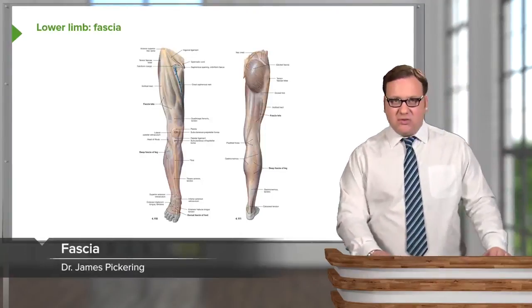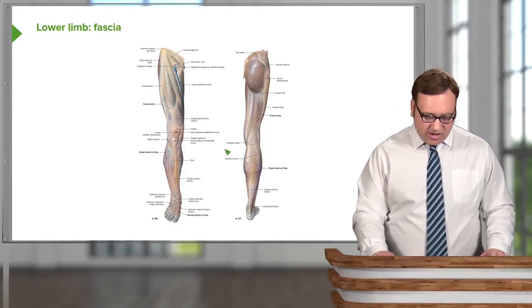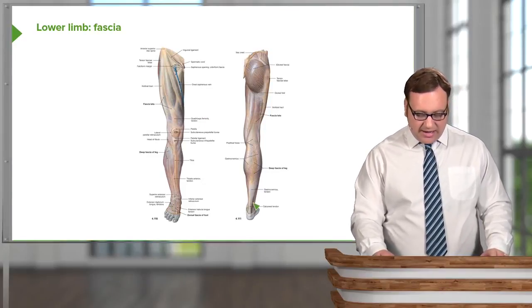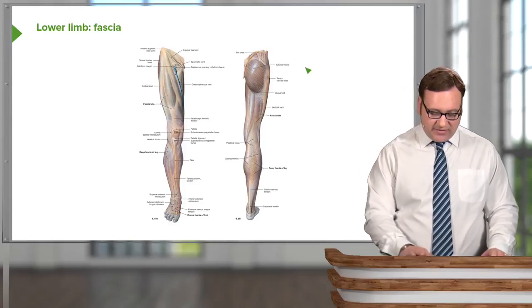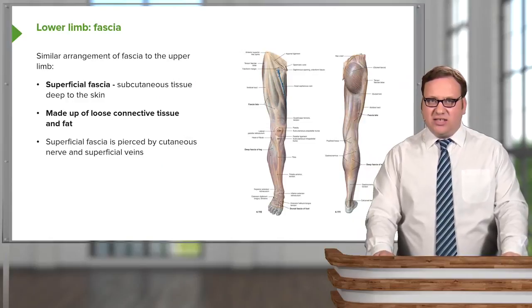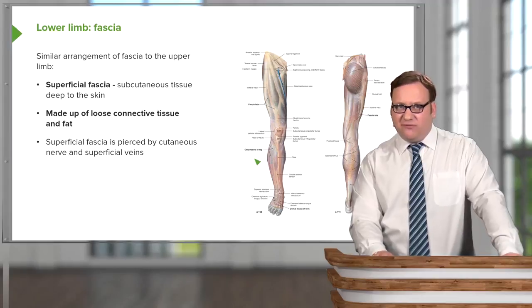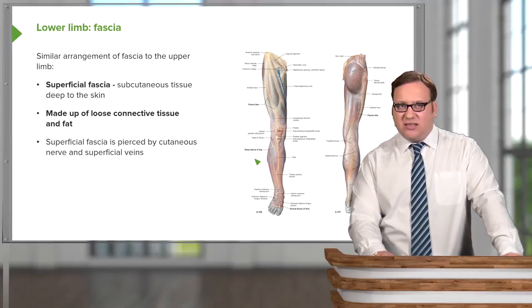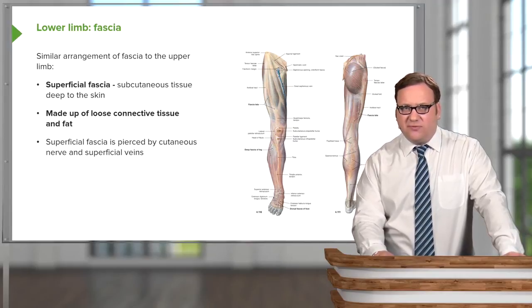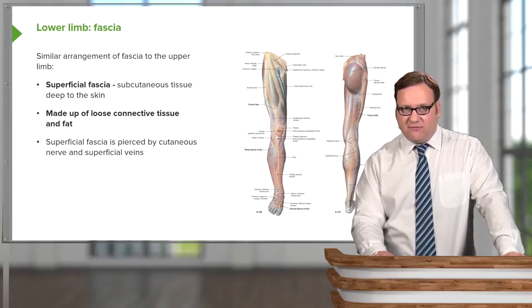Similar to the upper limb, we have a tight layer of deep fascia running all over the lower limb. Here we see the anterior surface of the lower limb, and here we see the posterior surface. We can see this glistening white membrane, which is the deep fascia. Superficial to the deep fascia, we have the superficial fascia, which is in the subcutaneous tissue just deep to the skin. Like the superficial fascia of the upper limb, it is made up of loose connective tissue and can contain fat.